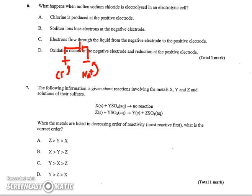Number six wants to know what happens when molten sodium chloride is electrolyzed in an electrolytic cell. So I've just made a little sketch here that the negative electrode is going to be attracting the sodium ions, which will then become sodium metal, which means they're picking up an electron, whereas the chlorine ions will become chlorine gas. So it's going to become chlorine gas, and they're going to give up the electrons. So based on that, chlorine is produced at the positive electrode. That'd be true. Sodium ions lose electrons. That's not true. They're going to gain electrons.